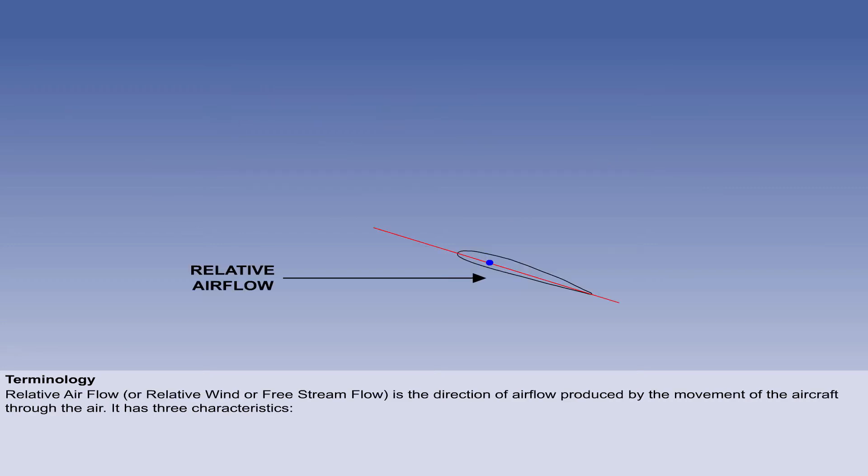Relative airflow or relative wind or free stream flow is the direction of the airflow produced by the movement of the aircraft through the air and has three characteristics.